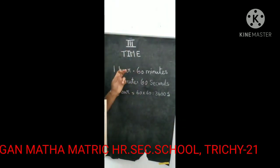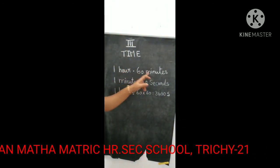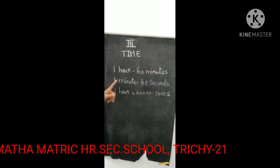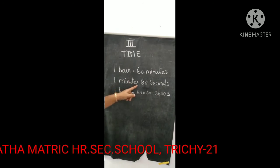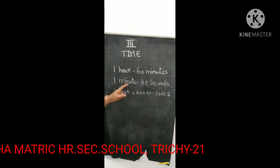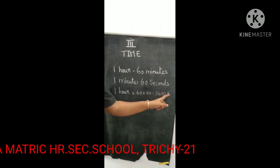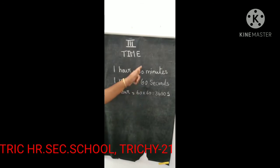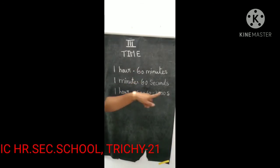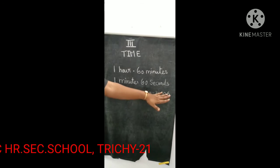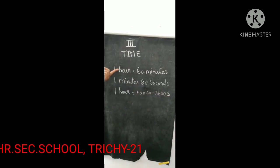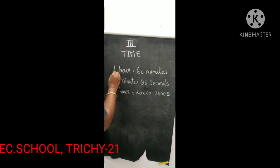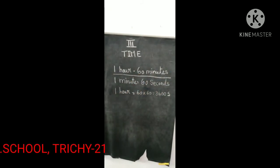Let's see. 1 hour equal to 60 minutes. 1 minute equal to 60 seconds. 1 hour equal to 60 multiplied by 60, which is 3600 seconds. So you know that 1 hour equal to 60 minutes. This is very important.